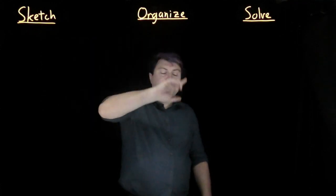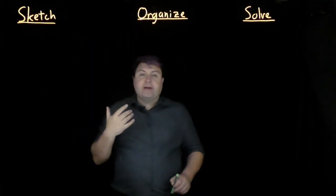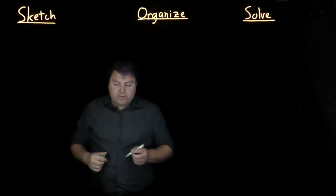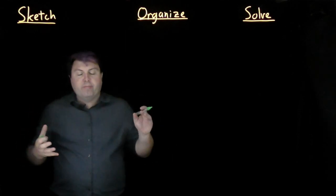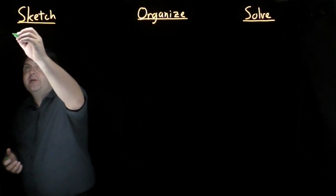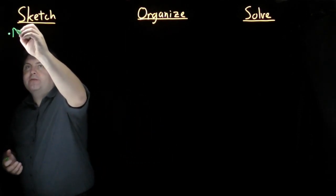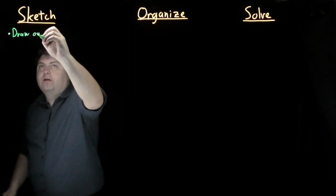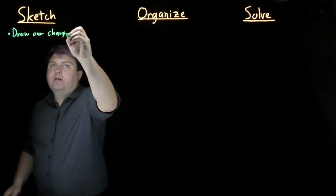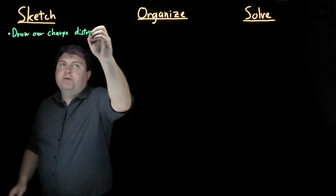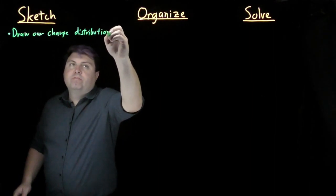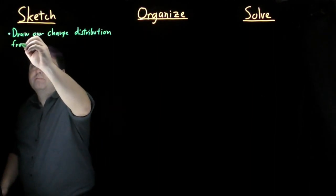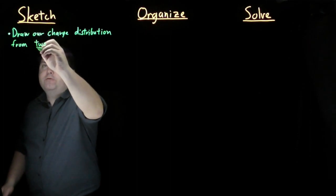Welcome! This is the sketch, organize, solve for Gauss's Law. So for Gauss's Law, we want to start by imagining our charge distribution. And the easiest way to help that is to draw our charge distribution from, very importantly, two perspectives.